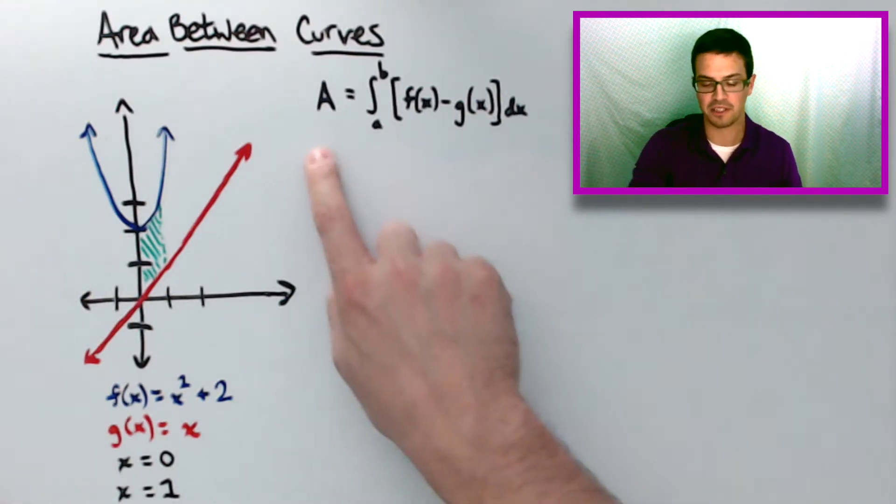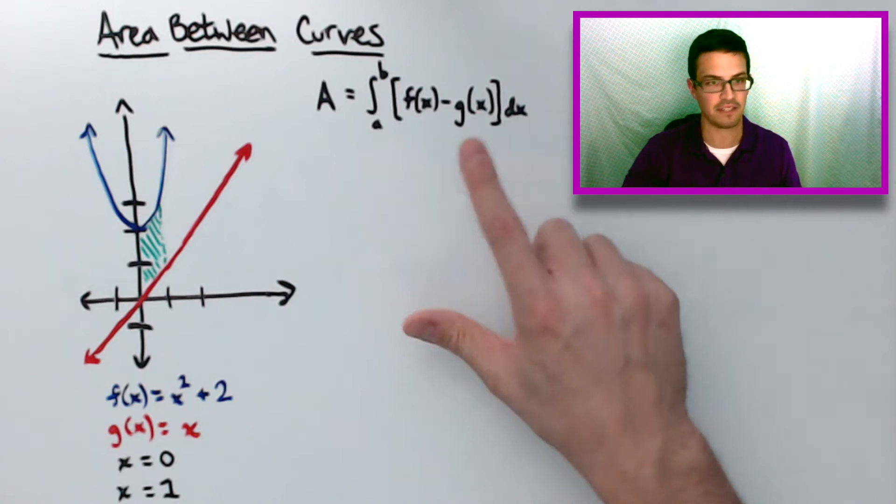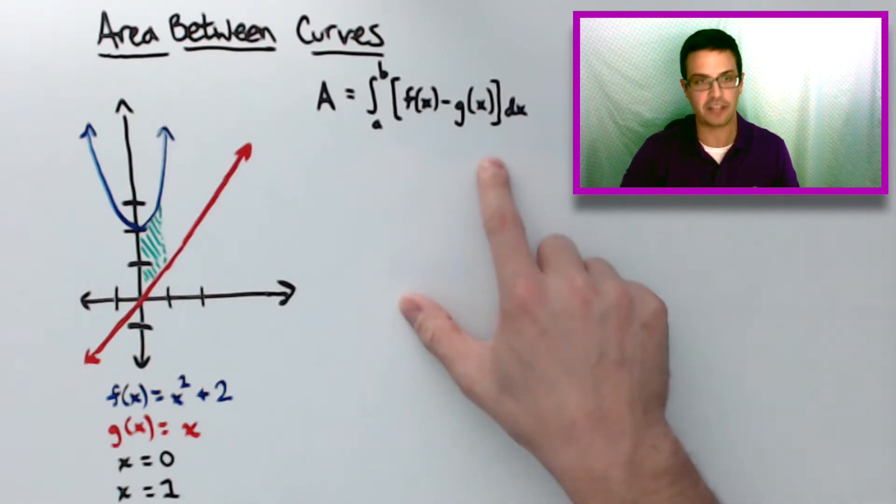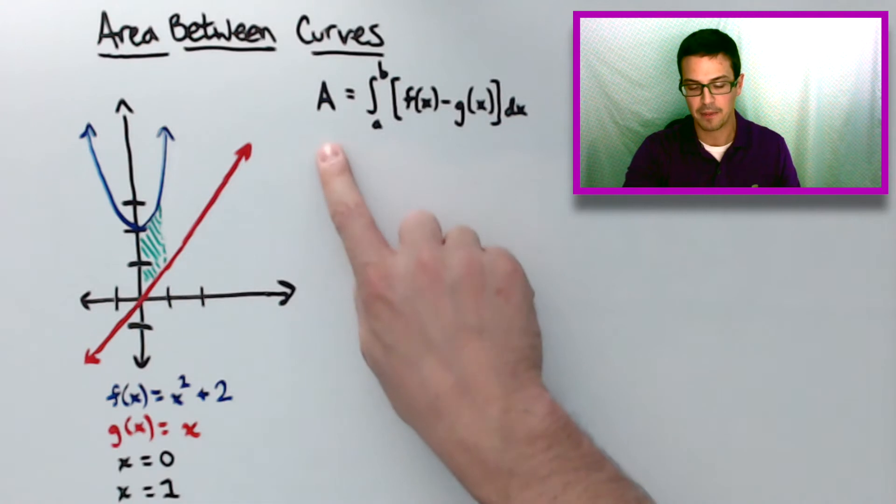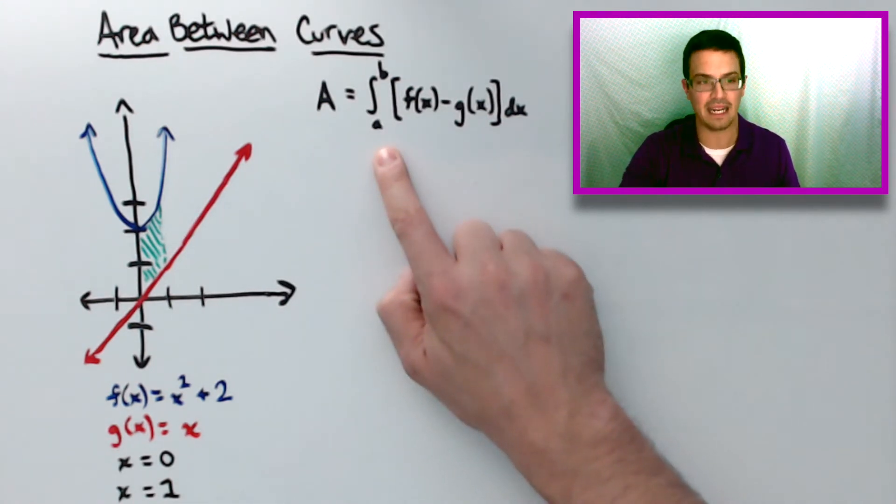Now to do that, we're going to be using this equation that was discussed in the previous video. So if you haven't seen that video, to show where this equation comes from, you're going to want to check that out. But you have this equation that looks like this, and basically it's the integral from a to b.